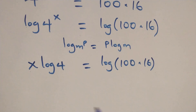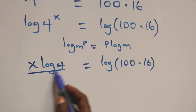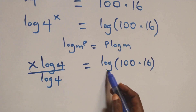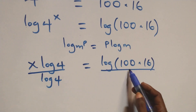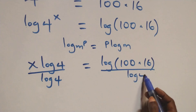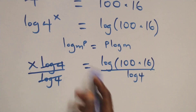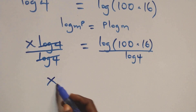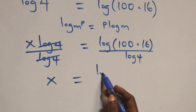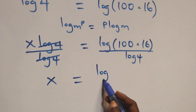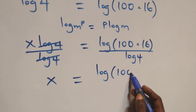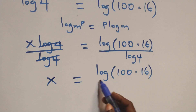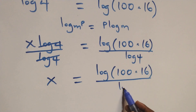From here, we divide both sides by log 4. We divide this side by log 4 and also divide this side by log 4, which implies that log 4 cancels each other. Now we have x equals to log of 100 times 16 over log 4.